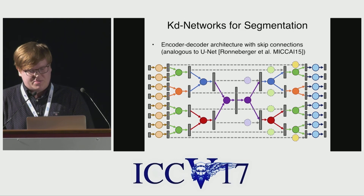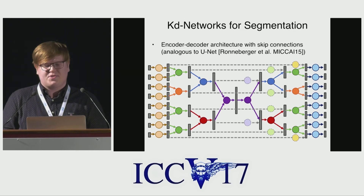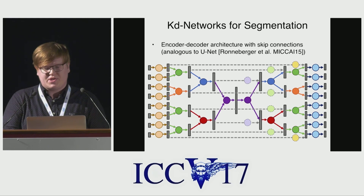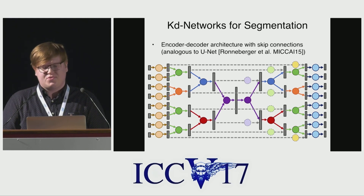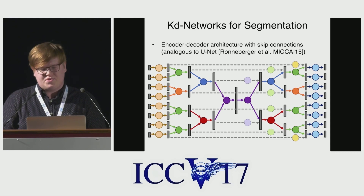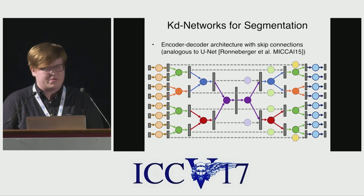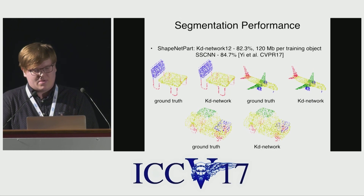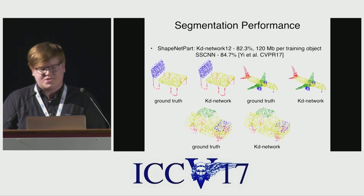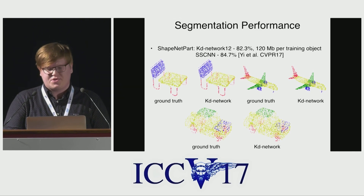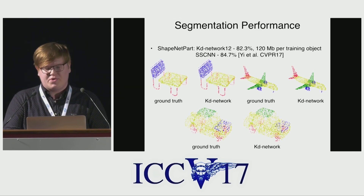It is possible to extend KD networks for segmentation. This is done with an hourglass-shaped architecture which follows the ideas of U-Net through the use of additional skip connections between representations of the same nodes before and after the bottleneck. In case of part segmentation, the results are slightly worse. However, one of the advantages of KD networks for segmentation is a low memory footprint.